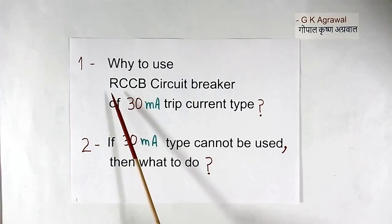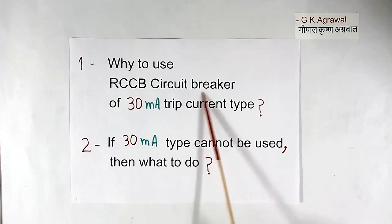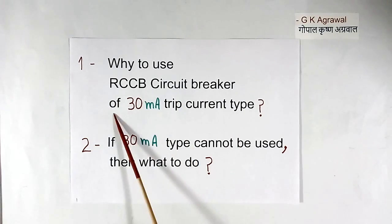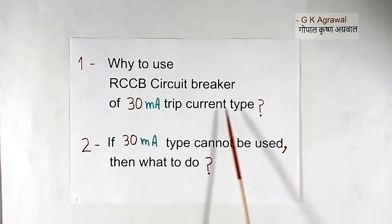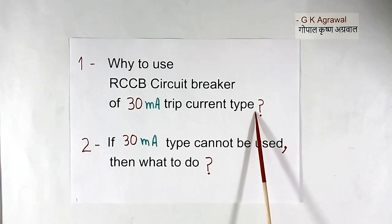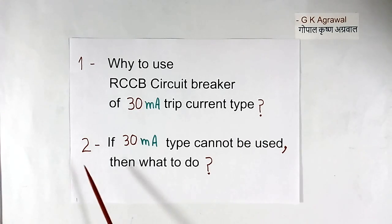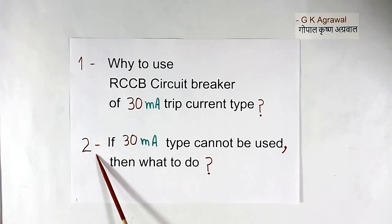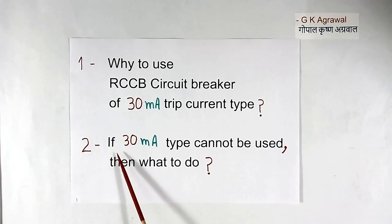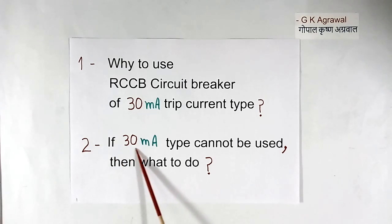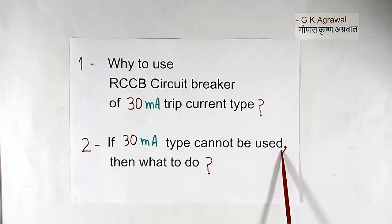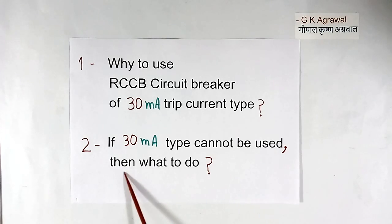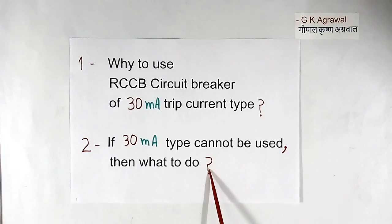Why use an RCCB circuit breaker of 30 mA trip current type only in the house? And if a 30 mA type cannot be used somewhere, then what to do?